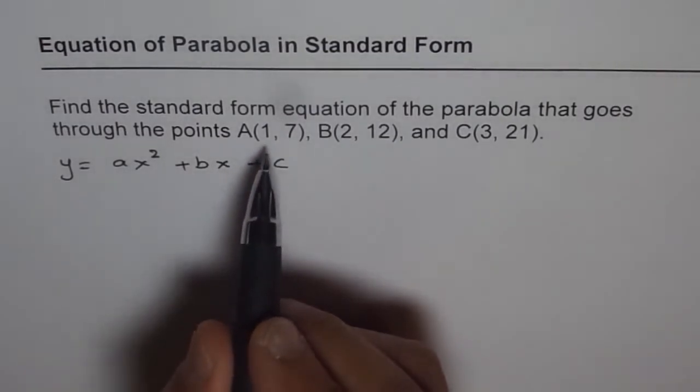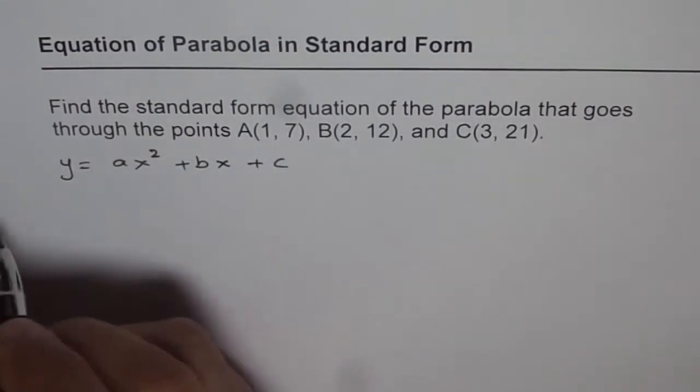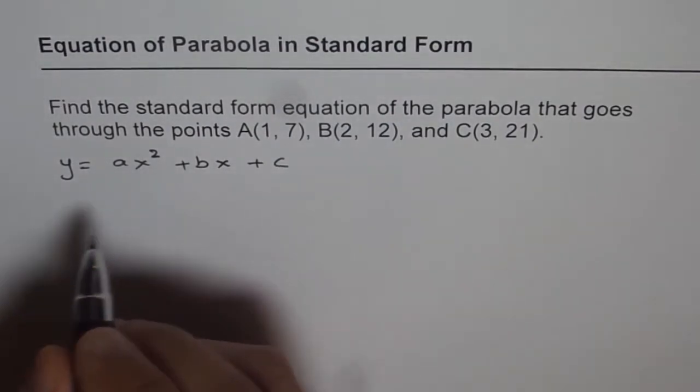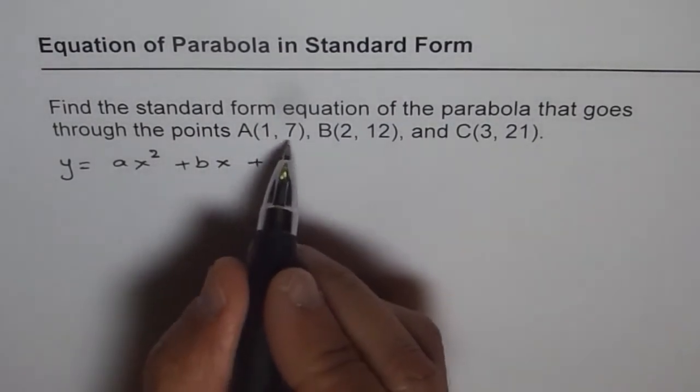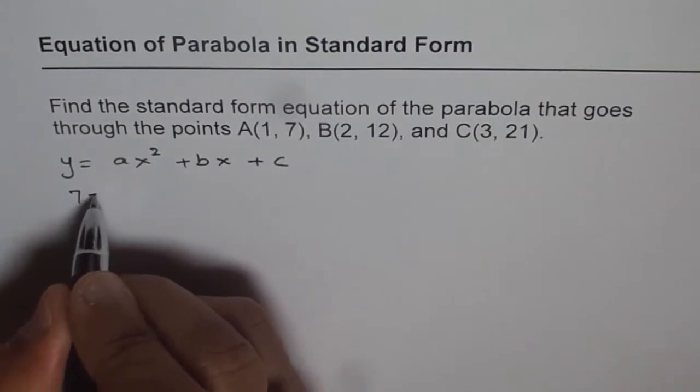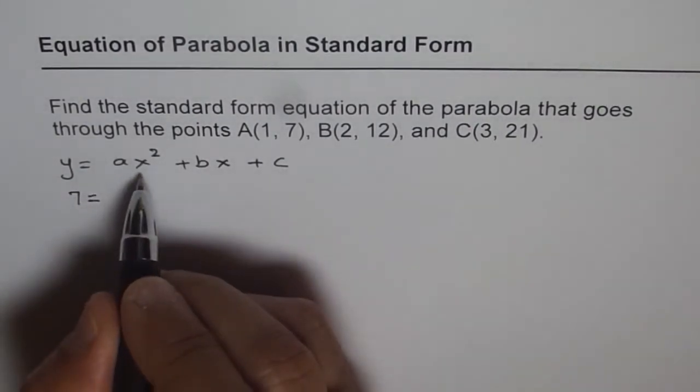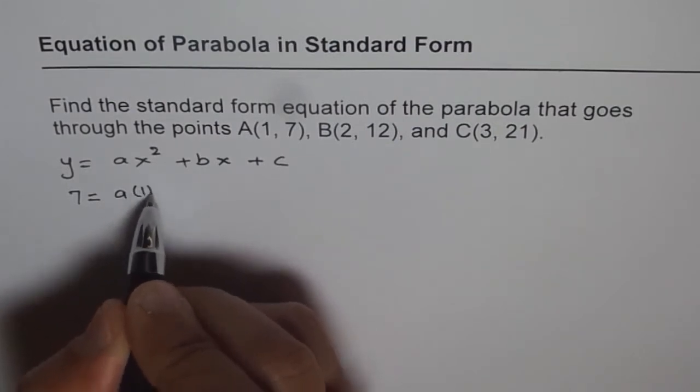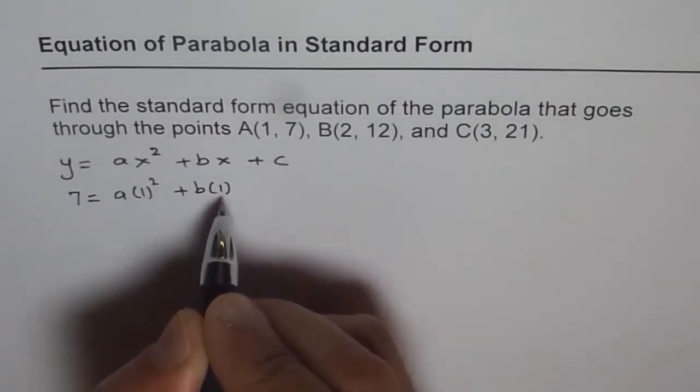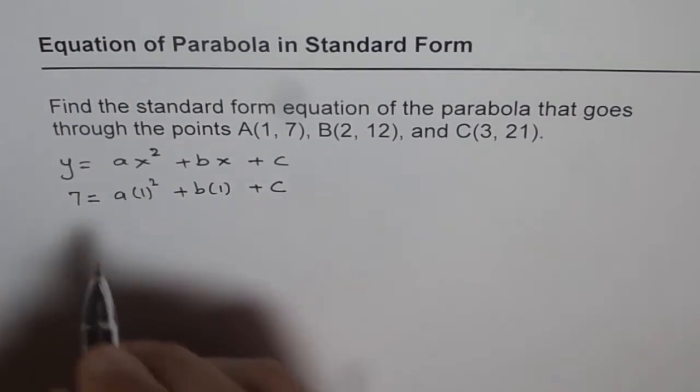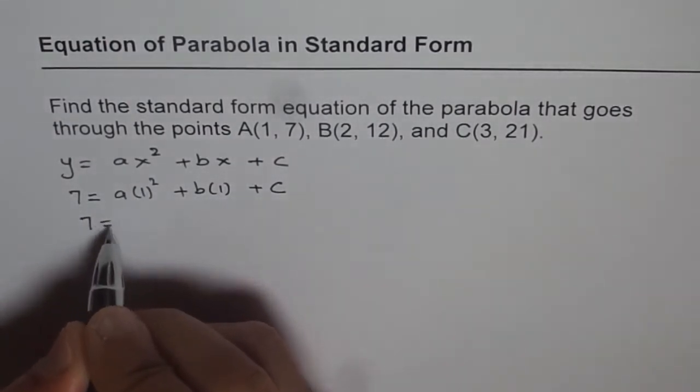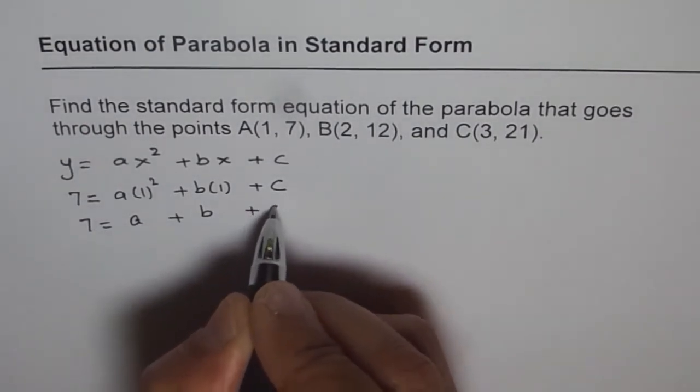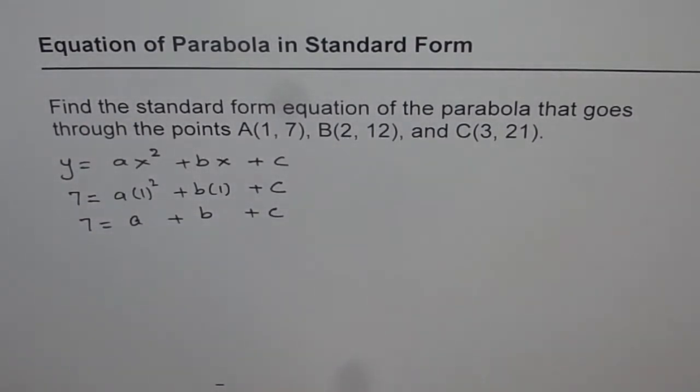So if I use the point (1, 7), so that means I am using point A which is (1, 7). In that case, y value is 7. So 7 equals, x value is 1, so we will replace x with 1. We get a times 1 square plus b times 1 plus c. And that gives us 7 equals a plus b plus c. So let us call this as our equation number 1.